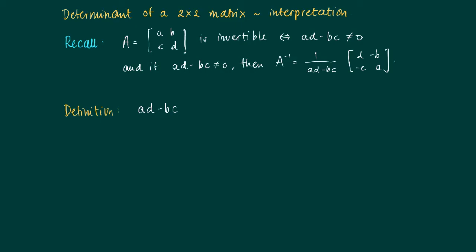Well, this number ad minus bc is also called the determinant of A, the determinant of the 2x2 matrix A. And it's usually denoted by det(A).